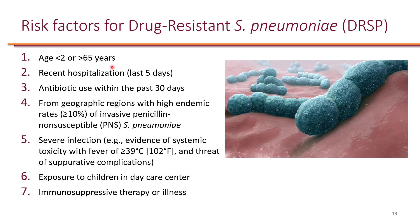Age over 65 remains a risk factor. Recent hospitalization — meaning the previous five days — is also a risk factor, as is antibiotic use in the last month. People from geographic regions where there is more than 10% risk of penicillin non-susceptible Strep pneumo, people with severe infections (high fever of 39°C or higher, or threat of suppurative complications), exposure to children in daycare, and immunosuppressed patients are all at risk for drug-resistant Strep pneumo.